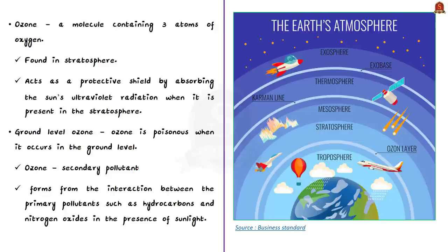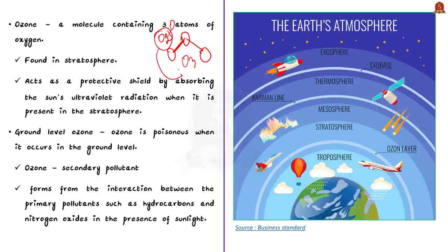First, let us know what is ozone. Oxygen as a molecule always exists as a pair — one oxygen atom always has the company of another oxygen atom — together forming an oxygen molecule, O2. But ozone exists as three oxygen atoms. When one more oxygen atom gets added to the normal oxygen molecule, it becomes ozone, written as O3.